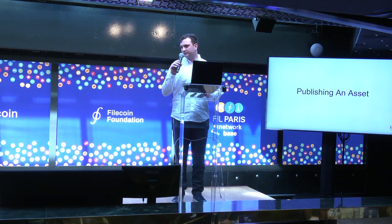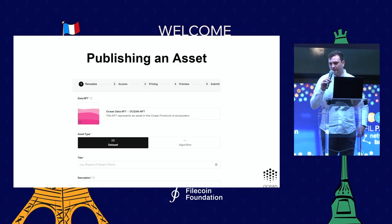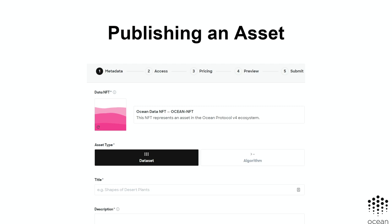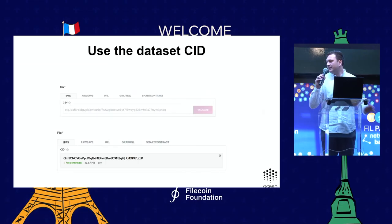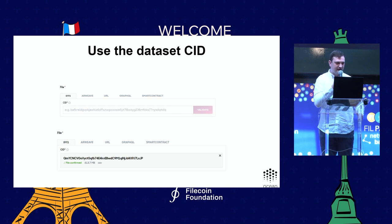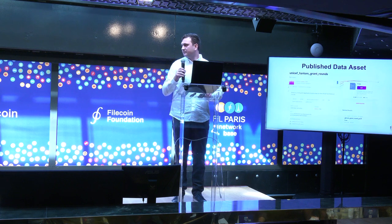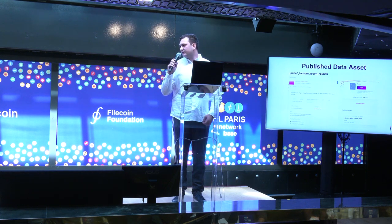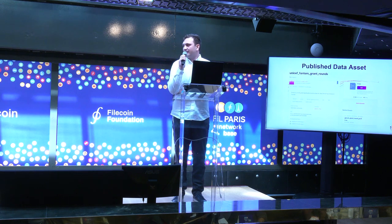Now we're going to walk through what it's like to publish an asset. When you go through that process, you want to describe the metadata information for your asset — such as who is the owner, the description of the asset, and any tags to help with discoverability. For anything stored on Filecoin or IPFS, you really only need the CID, and you tokenize that to connect it. You can see here when publishing, we're able to verify the CID being used to tokenize your asset. Once fully tokenized, others can purchase access to it.